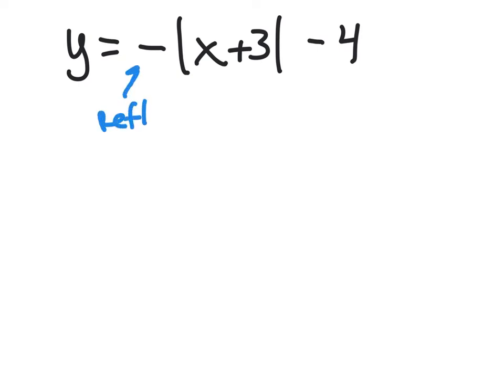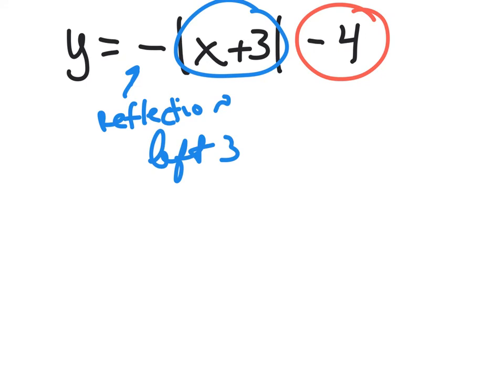You can see right off the bat that there's a reflection, so that tells us it's not going to be a v, it's going to be an upside-down v. There's also a horizontal shift right here in the x plus 3, which tells us that we are going to go to the left 3 units. And lastly, we have a minus 4 here on the outside, which tells us that we are going to be going down 4 units.